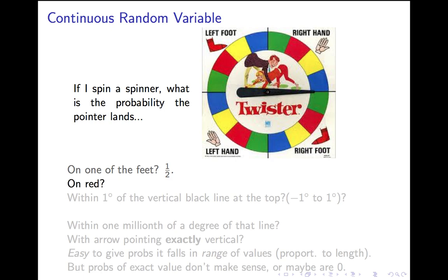How about the probability it will land on red? That's going to be one-quarter, because you can see one-quarter of the area is devoted to, or the length of the circle is devoted to each of the four colors.